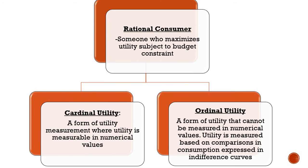We look at the rational consumer, which is someone who maximizes utility subject to a budget constraint. We look at two types of utilities: cardinal utility and ordinal utility. Cardinal utility is measurable in numerical values, whereas ordinal utility cannot be measured in numerical values, so we use indifference curves.